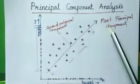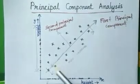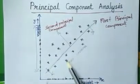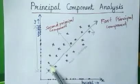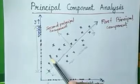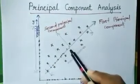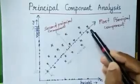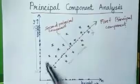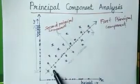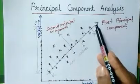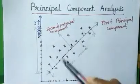Now let us see if we select the first principal component and project all these data points onto it — this point will be projected here, this point here, and likewise all the data points are somewhat far apart. That is, when we project all data points onto the line of maximum variance, we can separate them individually.